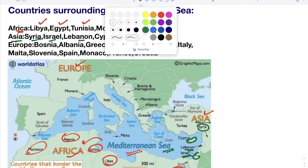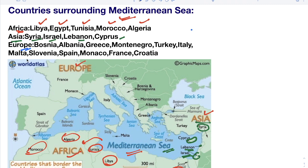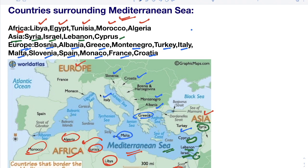The next continent is very important — Europe. There are a lot of European countries bordering the Mediterranean Sea: Bosnia, Albania, Greece, Montenegro, Turkey, Italy, Malta, Slovenia, Spain, Monaco, France, and Croatia. On the map: this is Turkey, Greece, Malta — which is also a small island — Albania, Montenegro, Bosnia (also known as Bosnia and Herzegovina), Croatia, Slovenia, Italy, Monaco, France, and Spain. That's 12 countries of Europe.